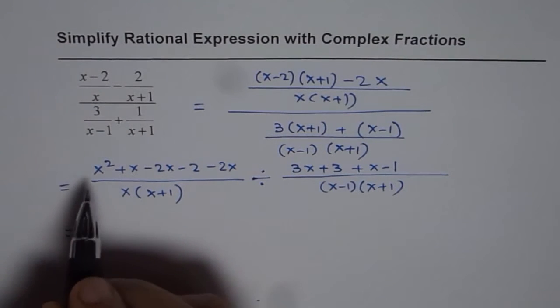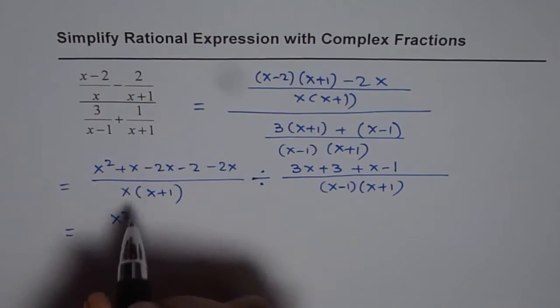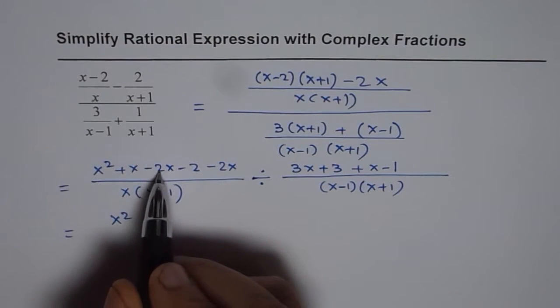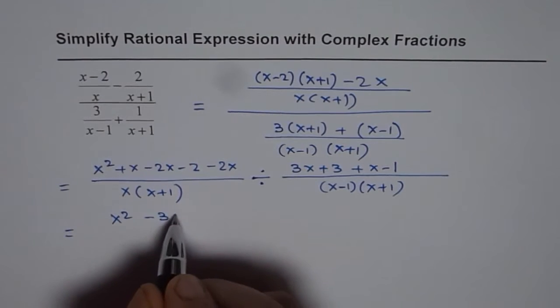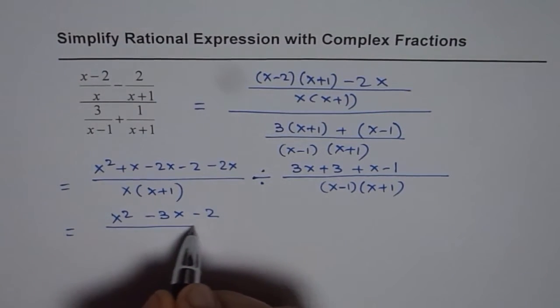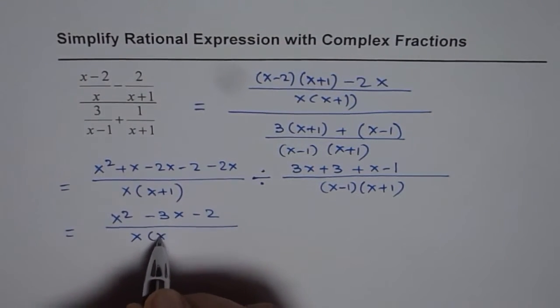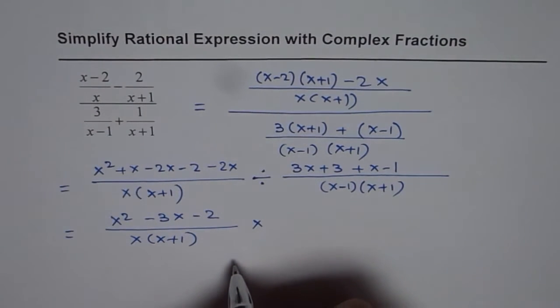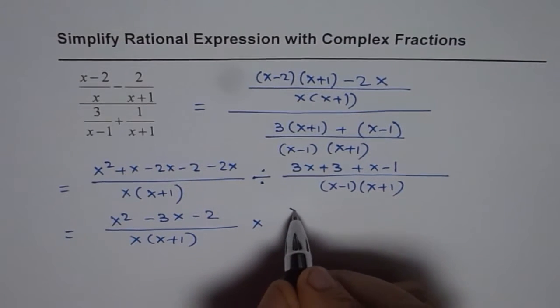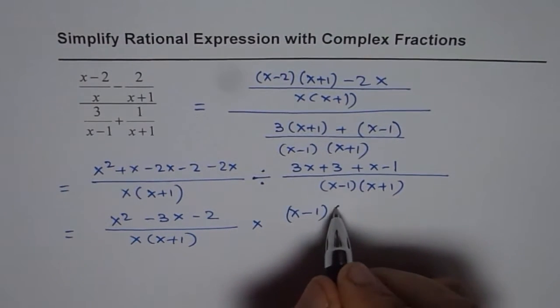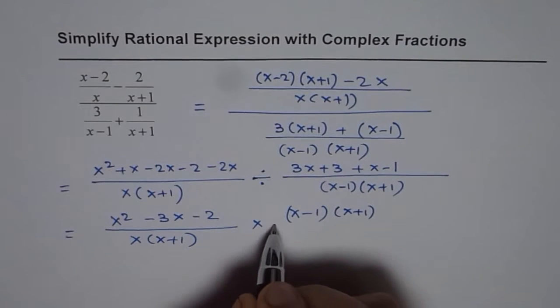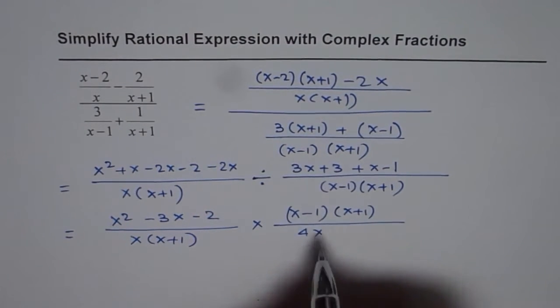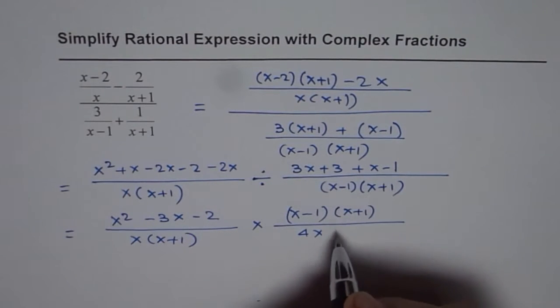Let us simplify. So we have x squared, x minus 2x minus 2x makes it minus 3x minus 2. x times x plus 1, we can convert division to multiplication and have reciprocal of this. So we get x minus 1 times x plus 1, and the denominator is 3x plus x is 4x, and 3 minus 1 is plus 2.